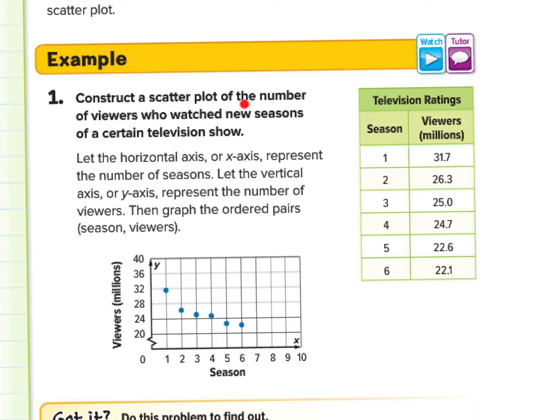Let's read this example. Construct a scatter plot of the number of viewers who watch new seasons of a certain television show. Let the horizontal axis, or x axis, represent the number of seasons. Let the vertical axis, or y axis, represent the number of viewers. So seasons, viewers. Then write the order of pairs. Season, viewers. The order of pairs being x, y.